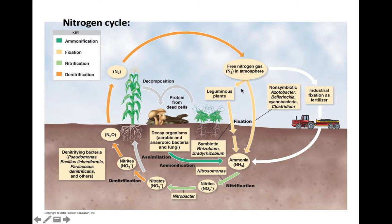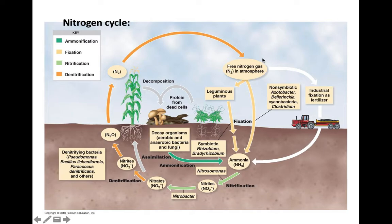Nitrogen fixation is when microbes take molecular nitrogen, which is not a usable form of nitrogen — meaning organisms can't use molecular nitrogen to make nitrogen-containing organic molecules like amino acids, proteins, and nucleic acids. A few microbes have the enzyme complex called nitrogenase that can take the unusable nitrogen and fix it into a usable form. This process takes molecular nitrogen and reduces it into ammonia, which then picks up a hydrogen ion to become ammonium, especially in soil or water.